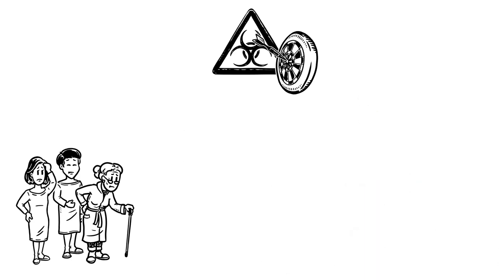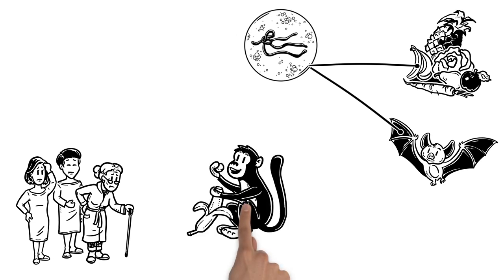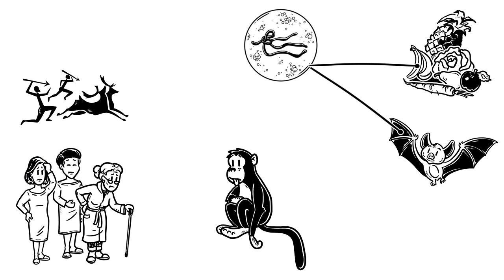The Ebola virus in bats, for example, is considerably distanced from most human life. But in a scenario where an infected bat contaminates fruits, which are consumed by monkeys, that are later hunted by humans, we can easily have an outbreak on our hands.